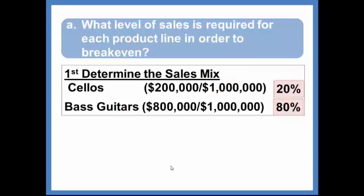Alright, so to determine what level of sales is required for each product line in order to break even, we have to look at the sales mix. So the mix is determined by what percentage of sales come from cellos and what percentage of sales come from bass guitars. So look at the computations here. Cellos had sales of $200,000 of which $1,000,000 were total sales. So that's 20% of sales come from cellos.